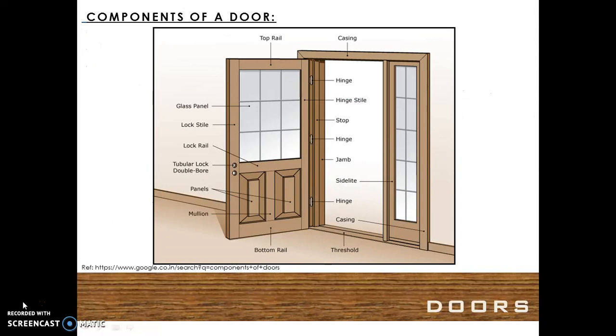The components of a door can be seen clearly in this image, where we can see the door shutter with its top rail, the glass panel, the lock style, the lock rail, the panels, the mullions, and the bottom rail.